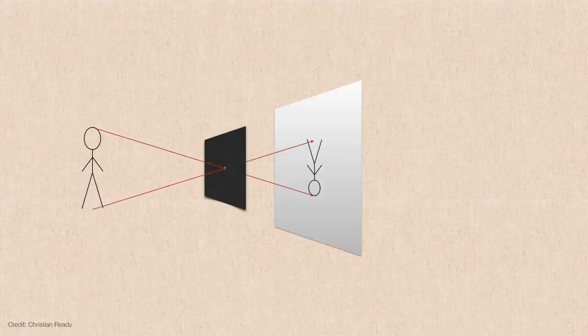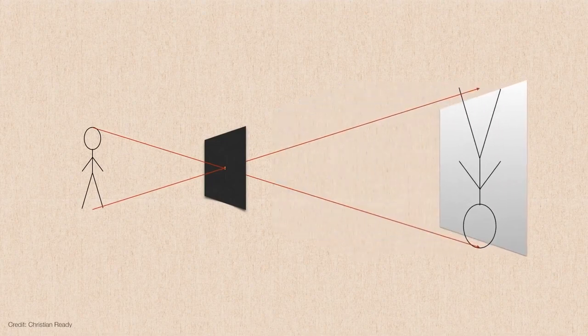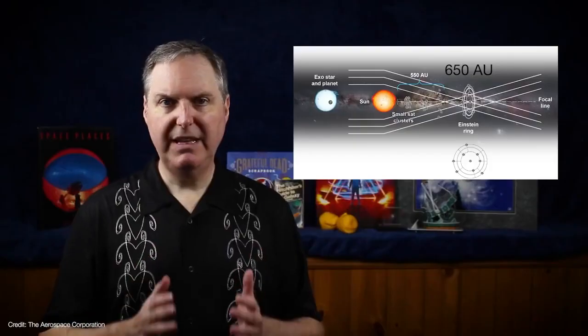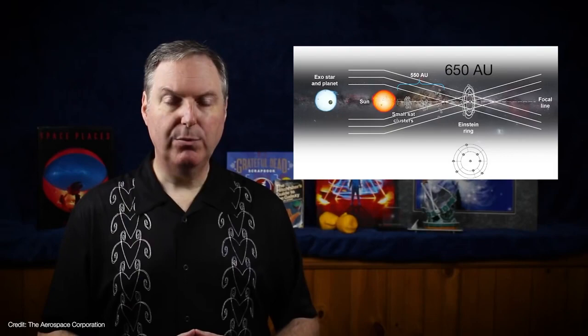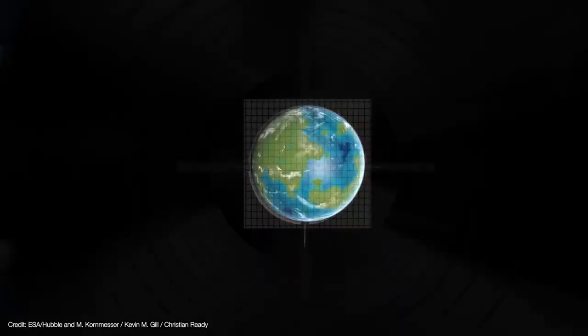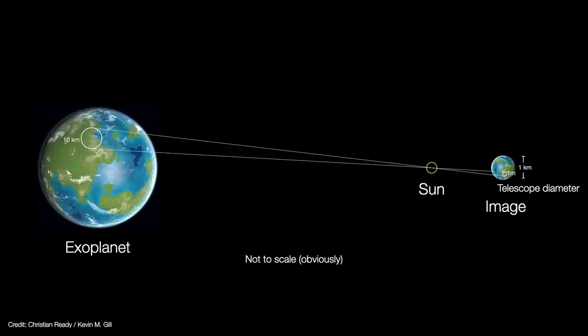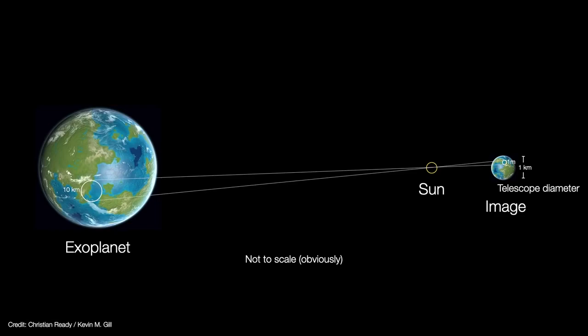Light from a source passes through the pinhole and makes an image on a screen. The farther the light has to travel to form the image, the larger the image gets. At 650 AU, the planet's image is 1.3 kilometers across. Instead of an image forming on the detector, the detector would be inside the image. This means an ordinary-sized telescope at the SGL can only image a single pixel of the planet. In this case, a one-meter sensor images a pixel corresponding to a 10-kilometer patch of the planet's surface. The telescope moves to the next pixel location and then makes another image. This is a technique called rastering.